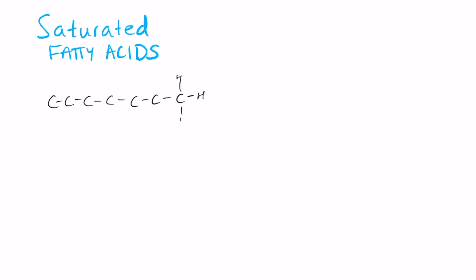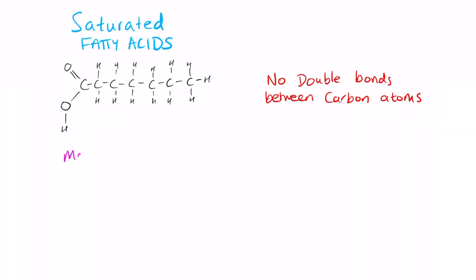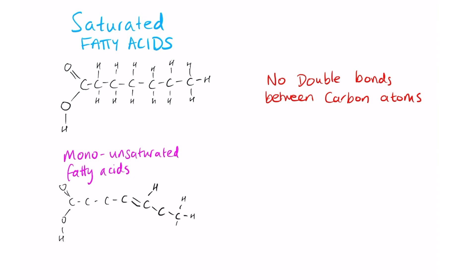We first have saturated fatty acids. You can see the chemical structure here and they don't contain any double bonds between the carbon atoms. We also have monounsaturated fatty acids and they actually contain one double bond between the carbon atoms.